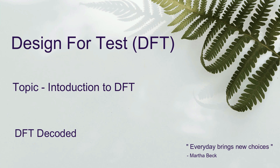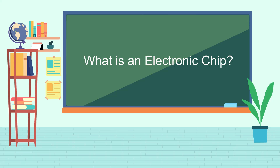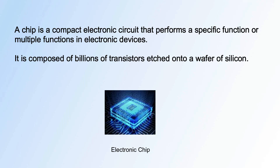We'll also discuss a lot of problems and issues faced in DFT as an engineer and explain solutions in the most simplified way. Let's start with the question: what is an electronic chip? A chip is a compact electronic circuit that performs a specific function or multiple functions in electronic devices. It's the brain of all electronic devices — it gives instructions and controls them. Today, what we call smart devices are smart because of the chip installed in them. It is composed of billions of transistors etched onto a wafer of silicon.